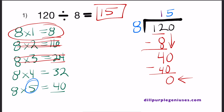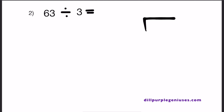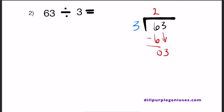Let's move on to number 2. We have 63 divided by 3. In this problem, 63 is the dividend and 3 is the divisor. How many times does 3 go into 6? 3 goes into 6 two times, so 3 times 2 equals 6. We subtract: 6 minus 6 is 0. We bring down the 3. How many times does 3 go into 3? The only answer is 1. So 3 times 1 is 3, and when we subtract that from 3, we get 0. Therefore, the final answer is 21.